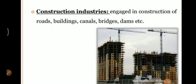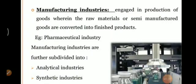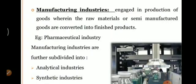Construction Industries engage in the construction of roads, buildings, canals, bridges, and dams. Now, Manufacturing Industries engage in the production of goods wherein raw materials or semi-manufactured goods are converted into finished products — just like the pharmaceutical industry. Manufacturing industries are further subdivided into Analytical Industries and Synthesis Industries.